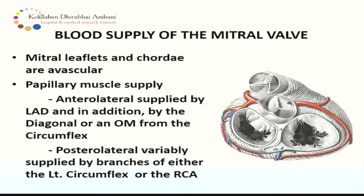It is important to know about the blood supply of this dynamic structure. The mitral leaflets and chordae are avascular. What is vascular is the papillary muscle: the anterolateral is supplied by the left anterior descending artery and additionally by the diagonal or OM branches from the circumflex. The posteromedial is supplied by branches of either the left circumflex or the right coronary artery.